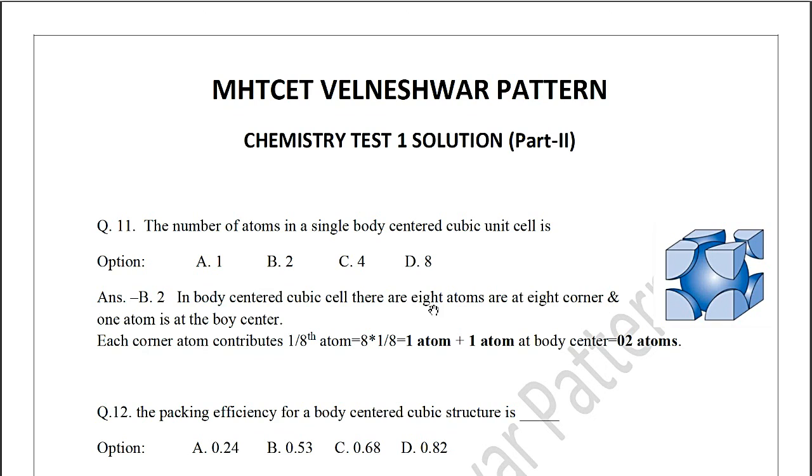Question number 11: The number of atoms in a single body centered cubic cell is? Options are 1, 2, 4, or 8. In body centered cubic cell there are 8 atoms at 8 corners. Each atom at corner is contributing 1/8th of atom, so 8 into 1/8, total 1 atom from corner. And 1 atom is at the body center. So there are total 2 atoms. The correct option is B2.